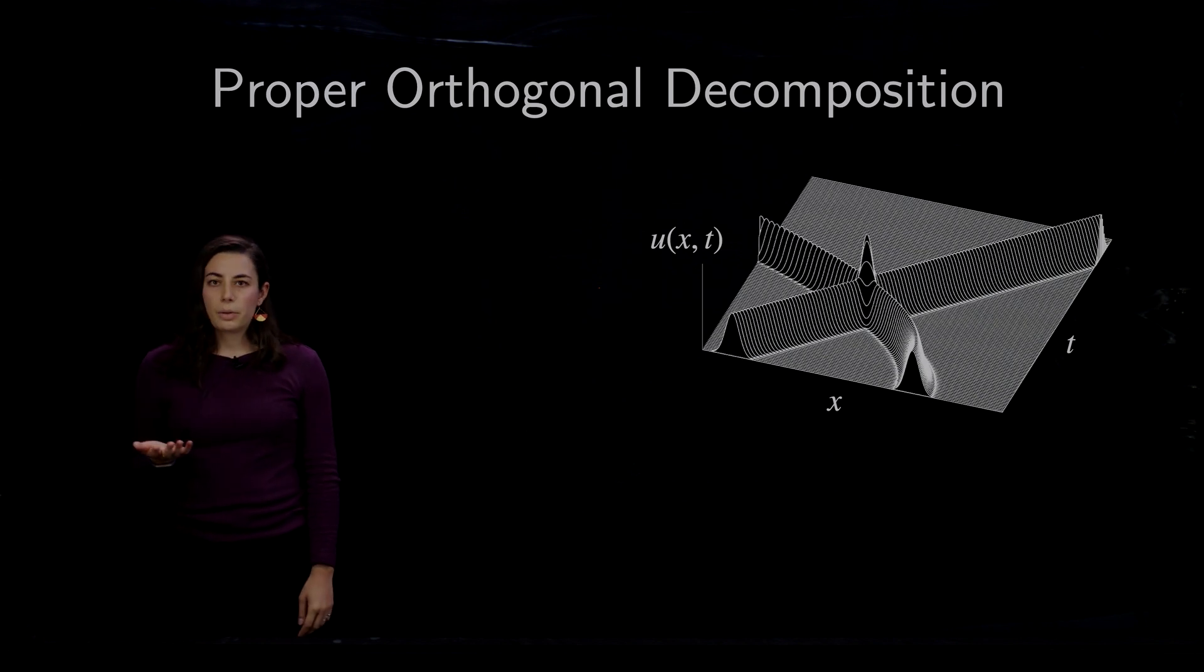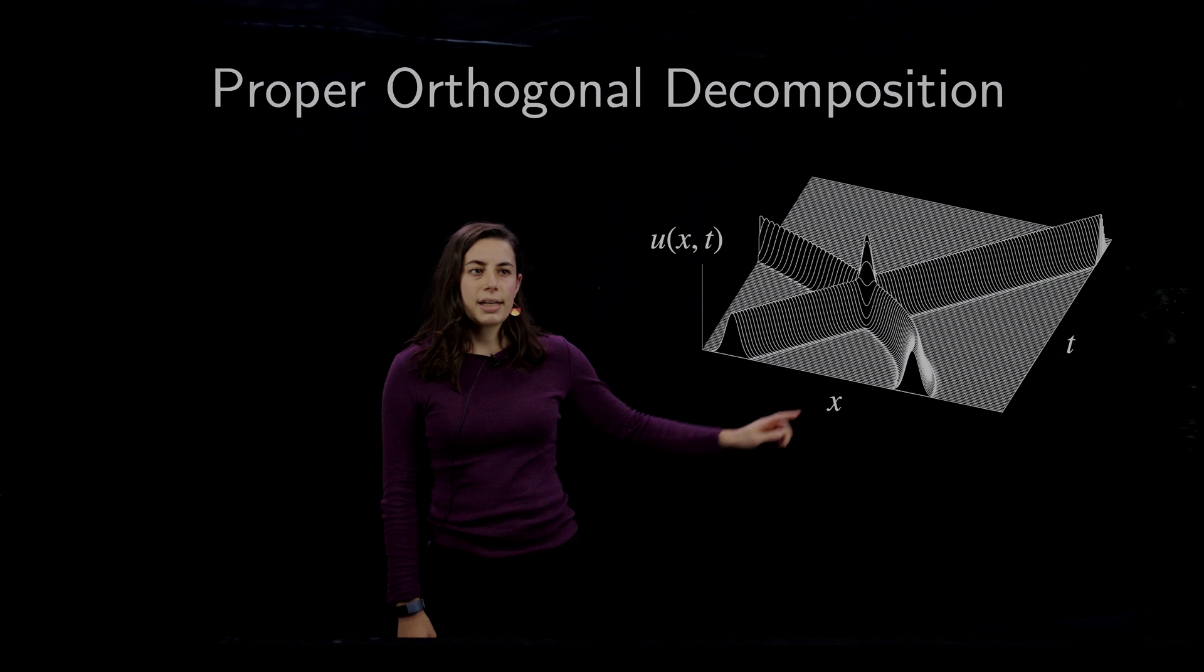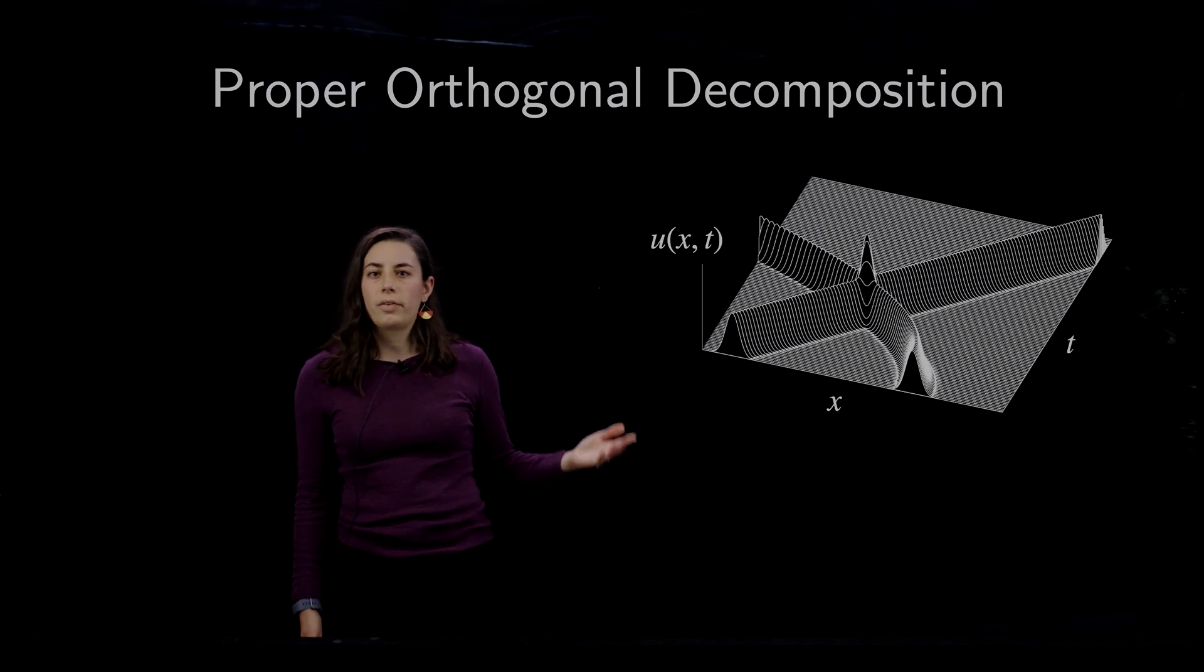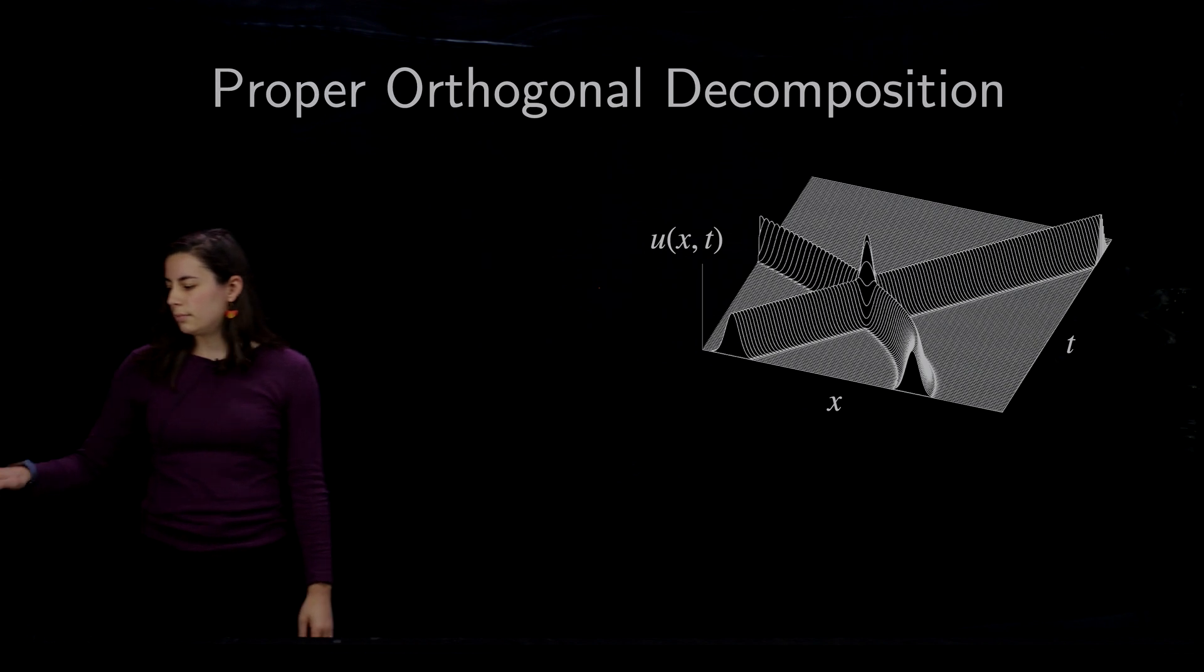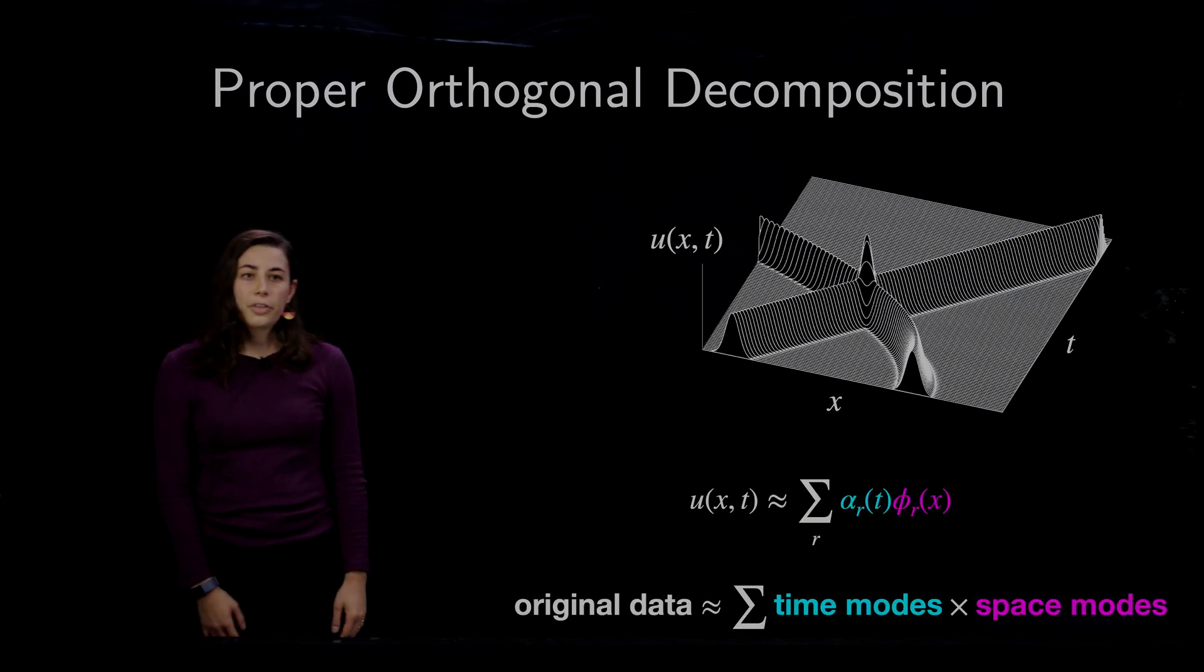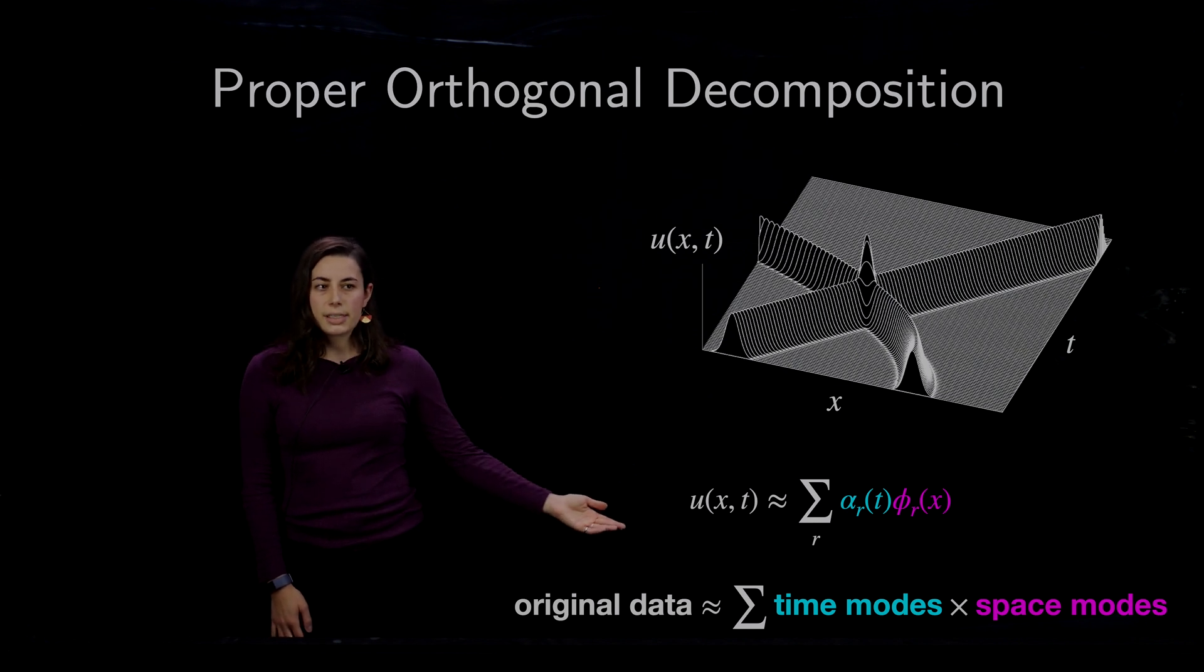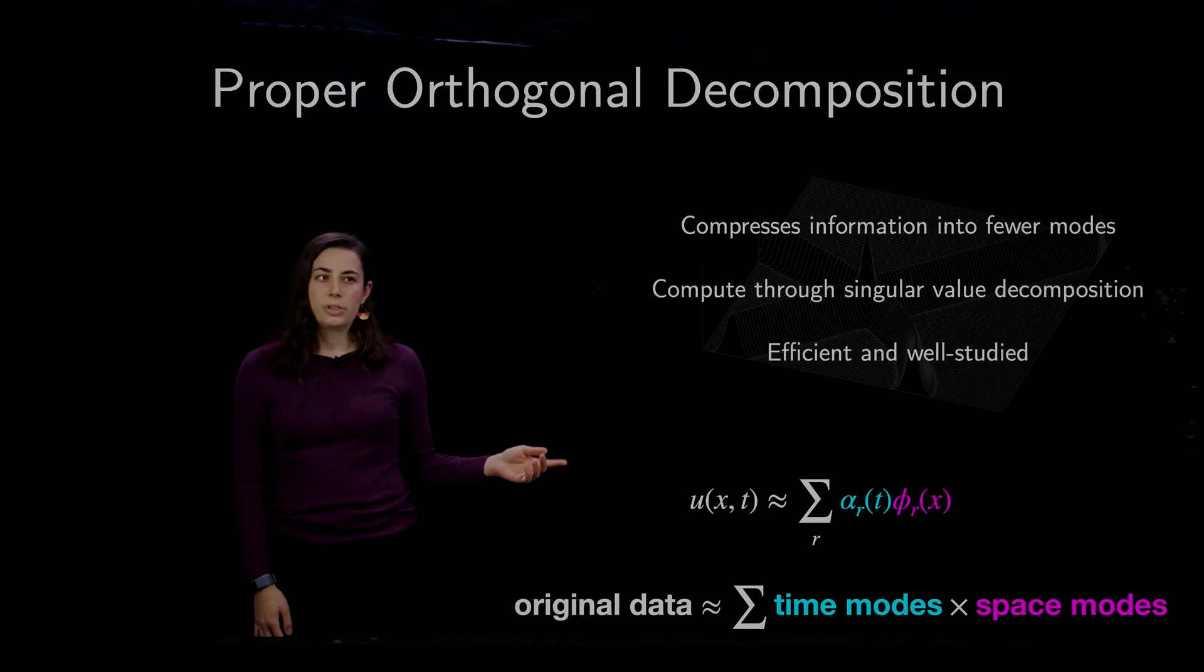The main way that we do this is through proper orthogonal decomposition. So the types of data that we want to consider are systems like this, where we have a function U that's of space and time. Space is X and time is T. And U can be any type of function. It can be here the wave height, or it could be something like voltage or pressure or anything that we want to consider. The proper orthogonal decomposition breaks this system down using space-time separation of variables into modes in space and time, and compresses the information into a small number of modes.